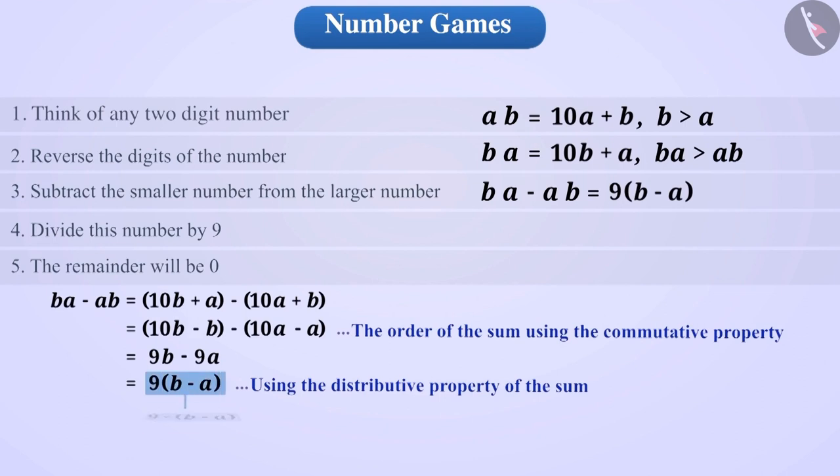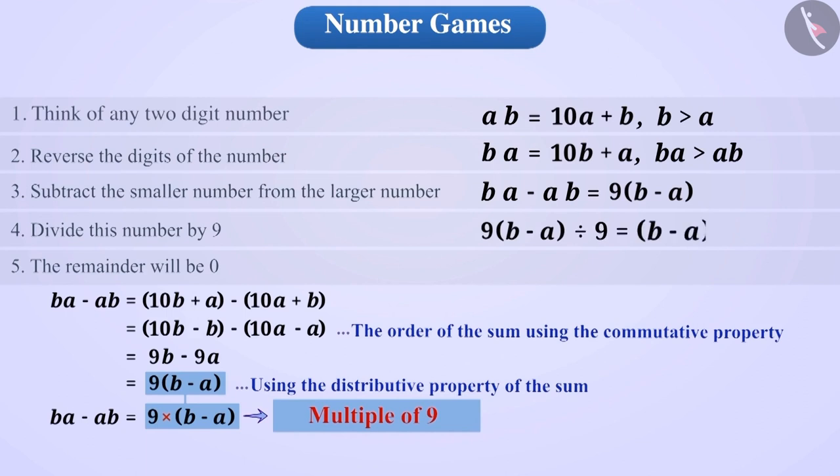We get 9 times B minus A in brackets. By looking at this statement, you will know that the result of BA minus AB will always be a multiple of 9. So, whenever BA minus AB is divided by 9, we get a remainder 0. Now, you must have understood how this game works.